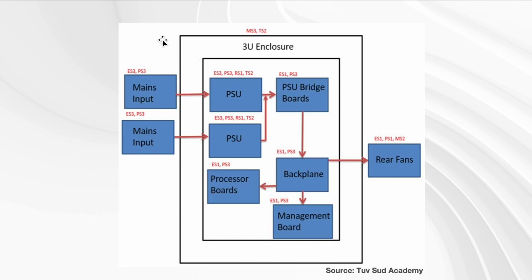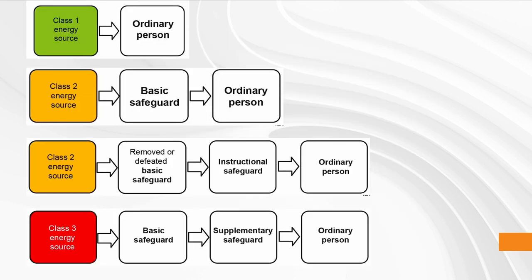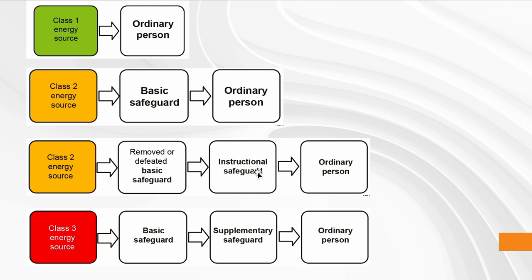Let's look at ordinary persons — setting aside other cases. In most cases, if it's ES1 (class 1 for electrical), there's no need for a safeguard. If it's ES2, there must be either a basic safeguard, or in the special case where the product has to be serviced, an instructional safeguard — which might say 'do not do this yourself, bring it to a special repair center.'